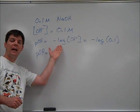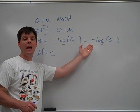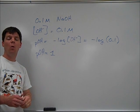by taking the negative log of the hydroxide ion concentration. So we're going to take, once again, the negative log of 0.1 to find a pOH of 1.